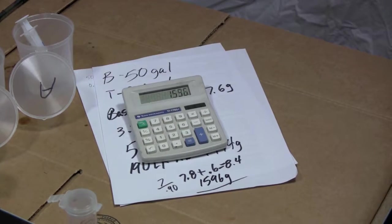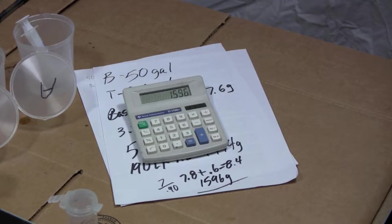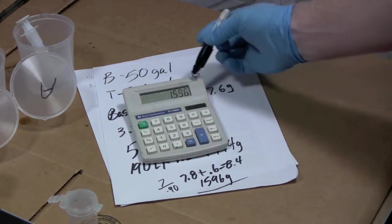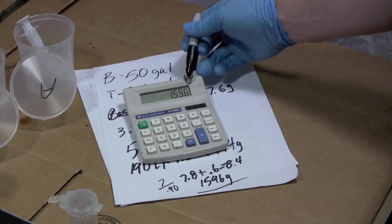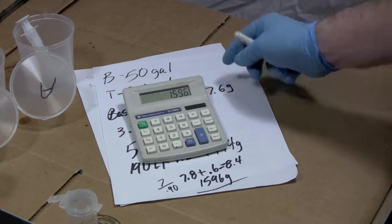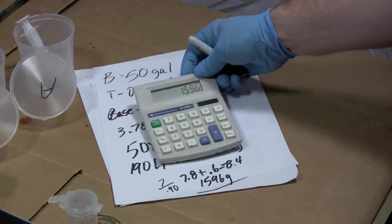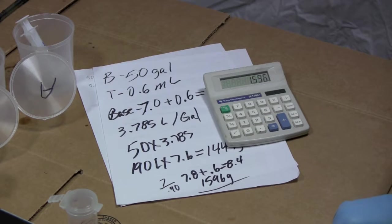So to make biodiesel out of the potassium hydroxide that I have, out of the oil that I had today, I would add 1,596 grams of potassium hydroxide into my 50 gallon batch. And that's how easy it is to do a titration.